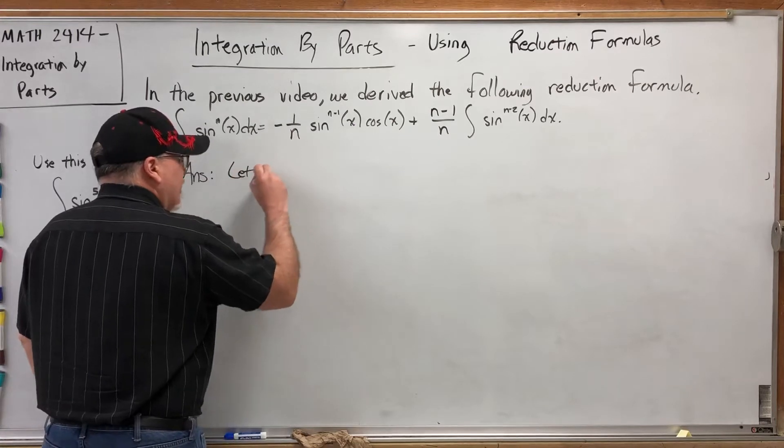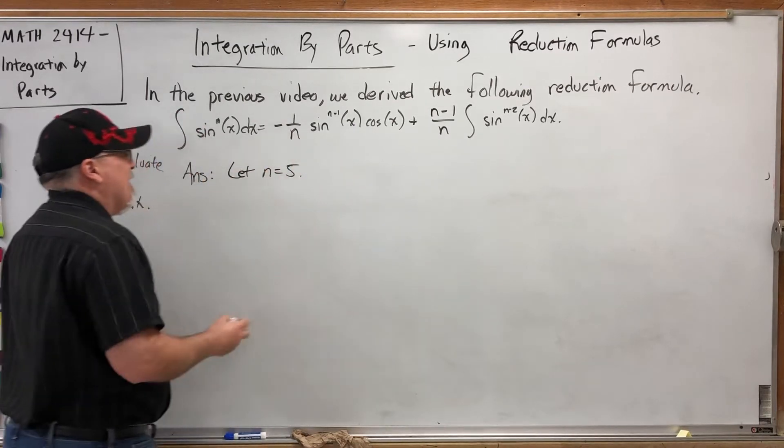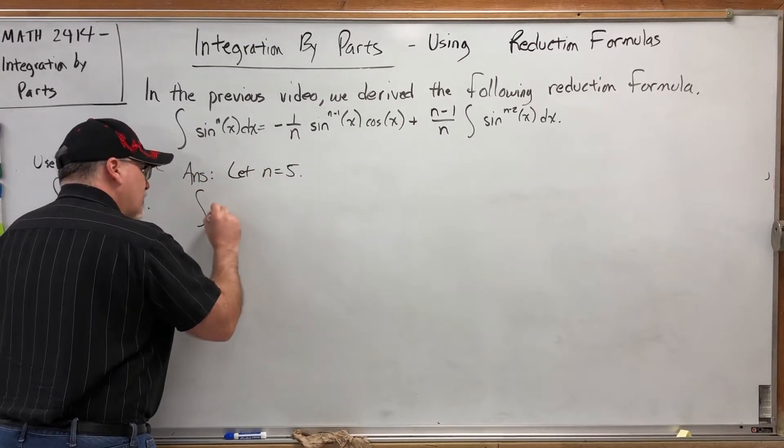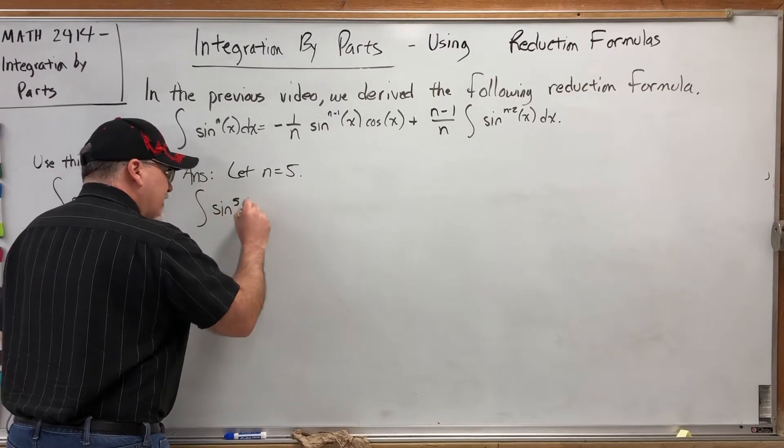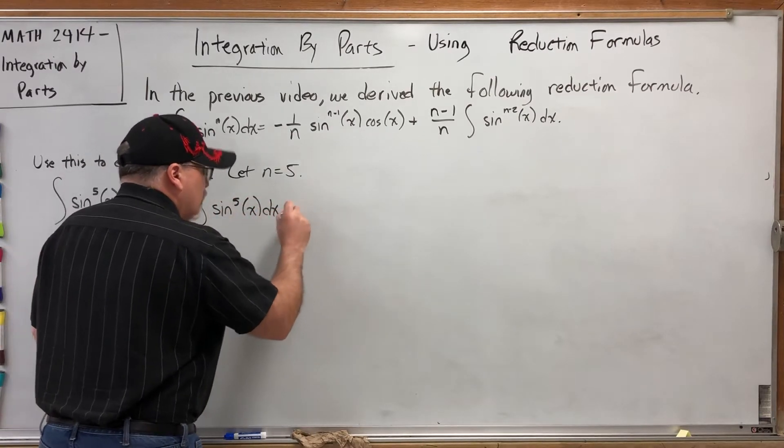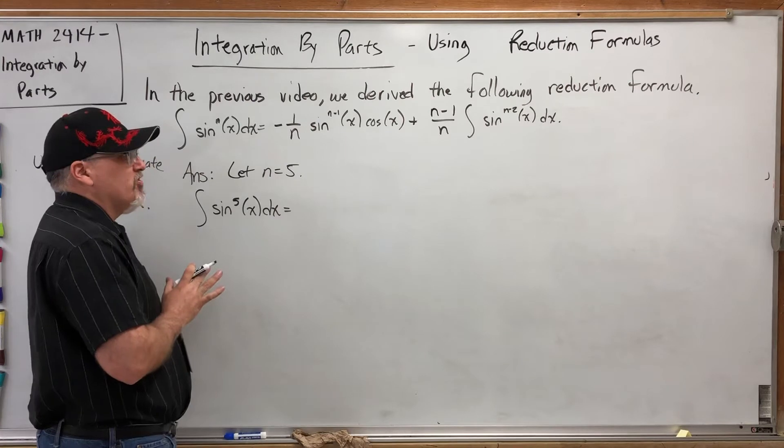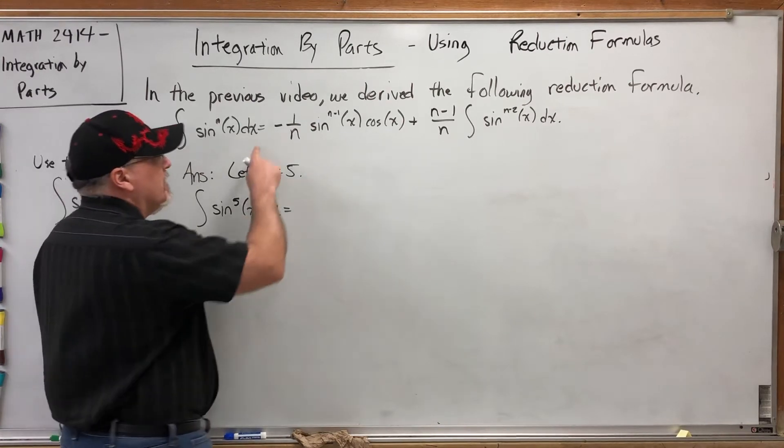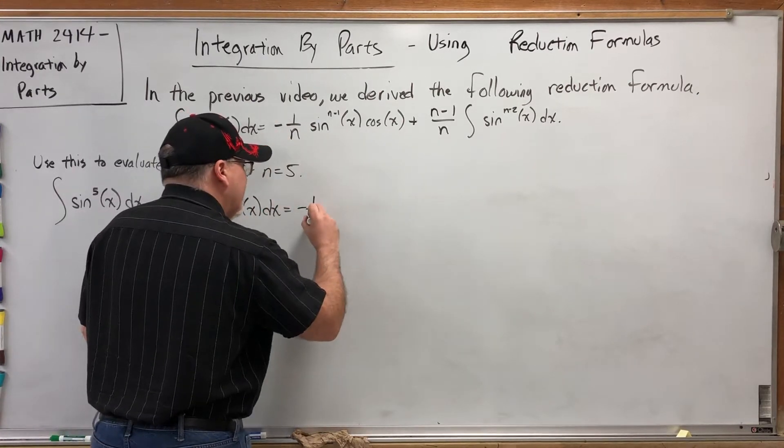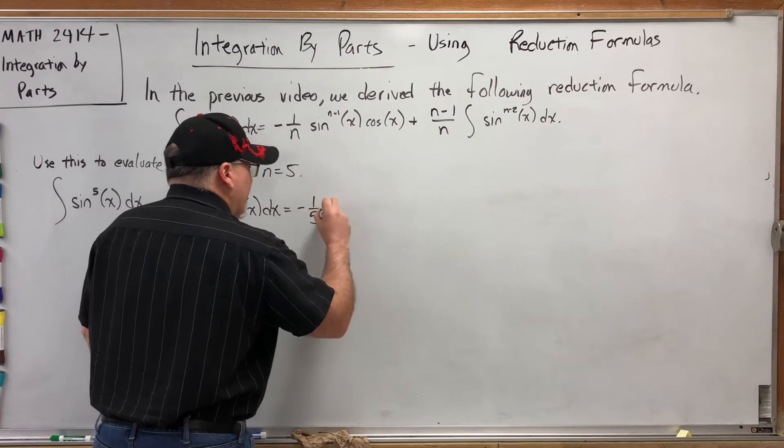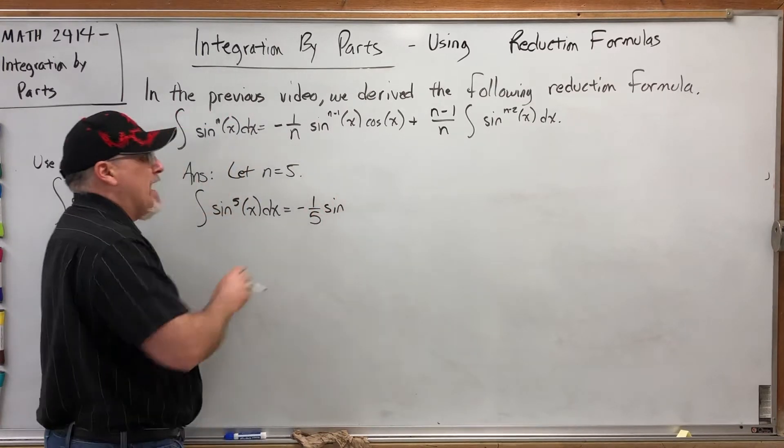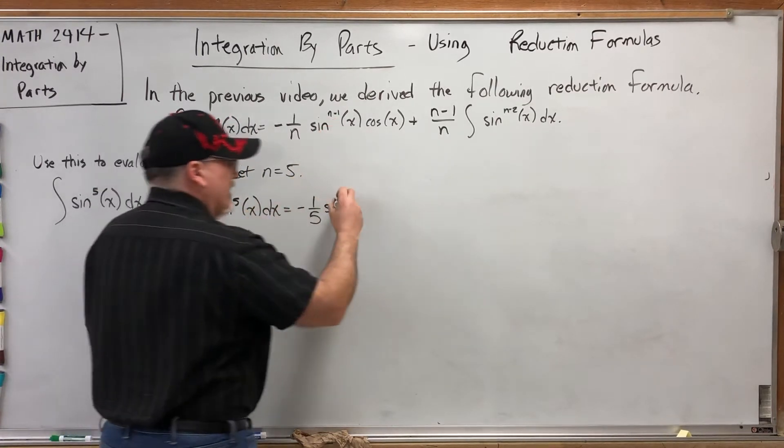So we're going to let n equal 5 and see what happens. The integral of sine to the 5th x dx is equal to, and everywhere there's an n I'm going to pretend it's a 5, negative 1 over 5 sine to the 4th power of x cosine of x.